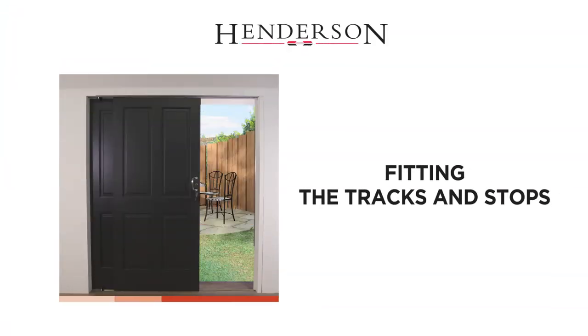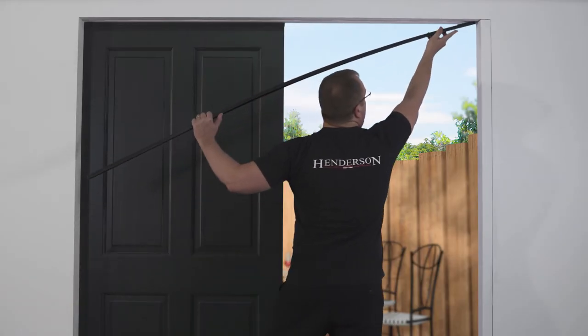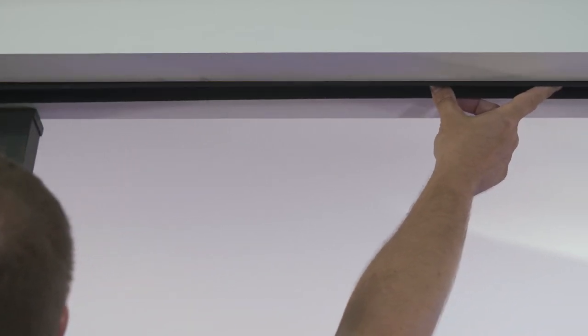Fitting the tracks and stops. Place the polypropylene channel into the pre-routed detail at the top of the opening. Use an adhesive to keep in place if necessary.